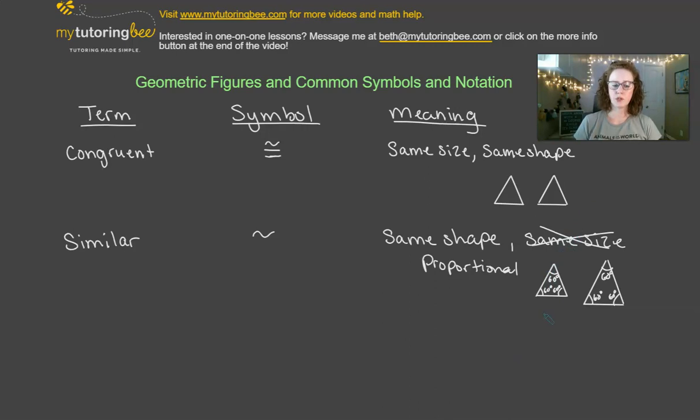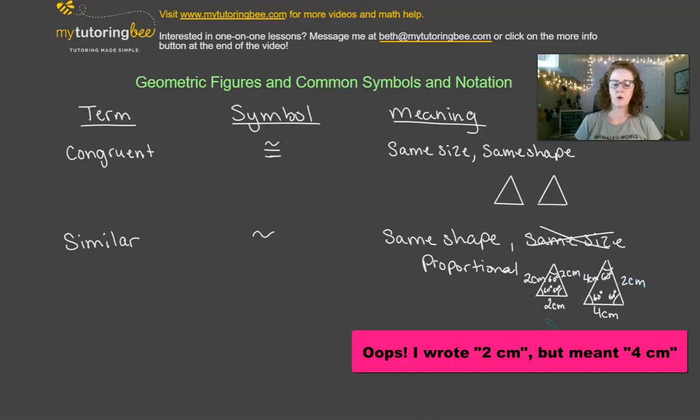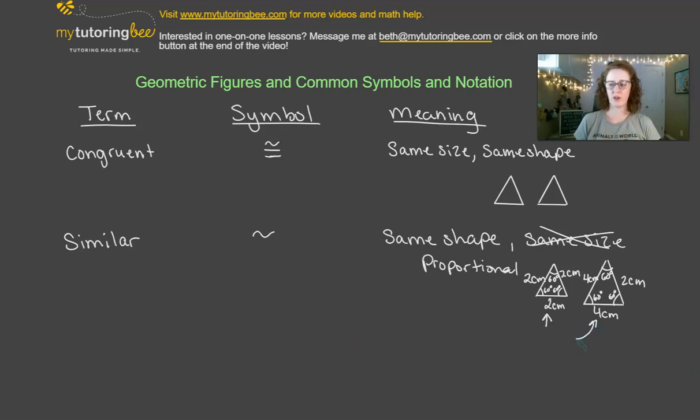Also when I say proportional, that means the sides of the triangles have to be proportional. So if this side is, let's say, two centimeters, then this side might be four centimeters. So it's just a times two proportion. So if this one is two centimeters, then this one also has to be four centimeters. So you see how these are all proportionate to each other. We can just take one of these sides, multiply times two, and we find the length of the sides of the other figure.